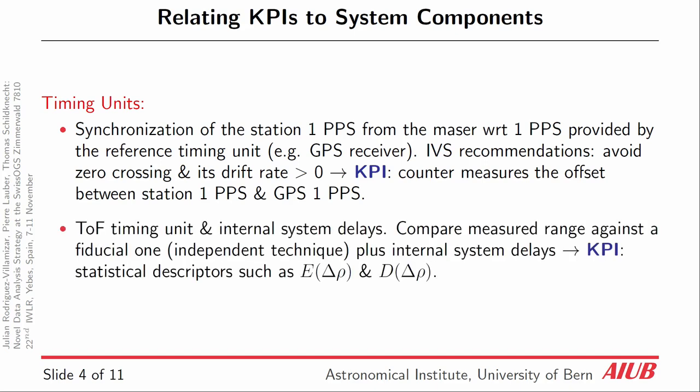Second, we have the timing unit for the time of flight. We also have to consider the geometrical path into the propagation of the beam through the receiving and transmitting chain, from the star diode until the reference point of the telescope. We have to measure it in an independent way so that we can assess central tendencies and dispersion of these differences and relate them with respect to the nominal specifications of our system.